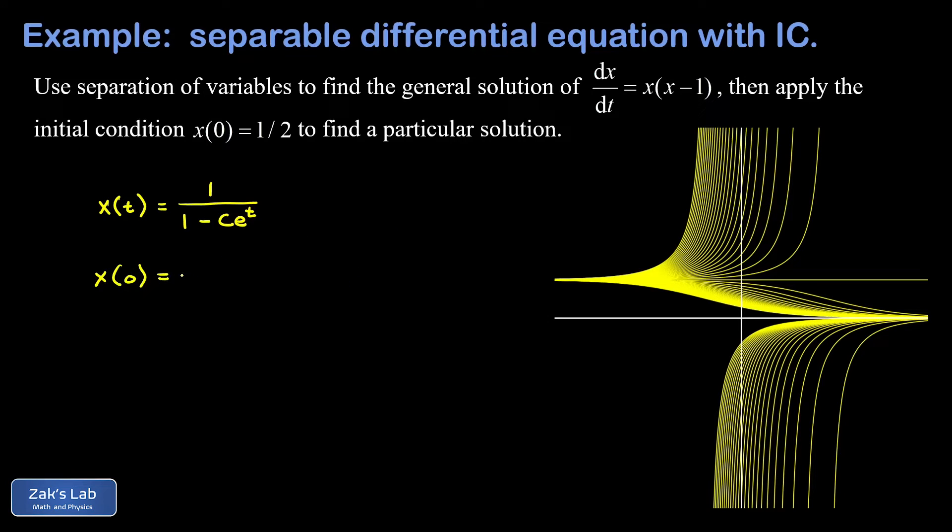Our next goal is to specify the curve that satisfies the differential equation, but also passes through the point (0, 1/2). This is what the initial condition is about. So we want to satisfy the condition that x(0) equals 1/2. So all we have to do is plug in 1/2 for the x value, and then plug in 0 for the t value. And then we'll solve for c and nail down the particular solution.